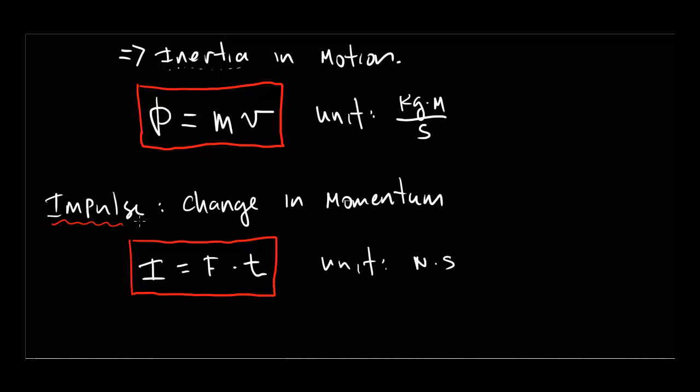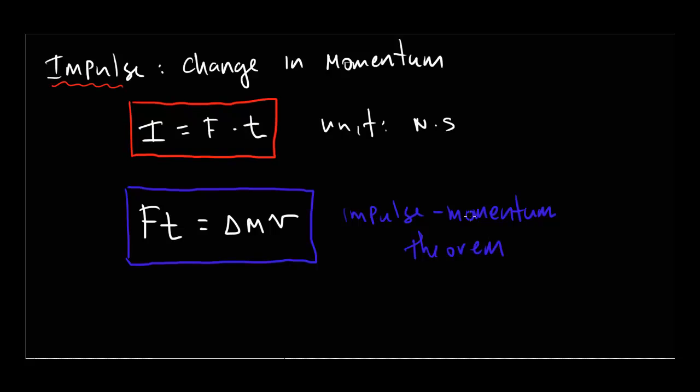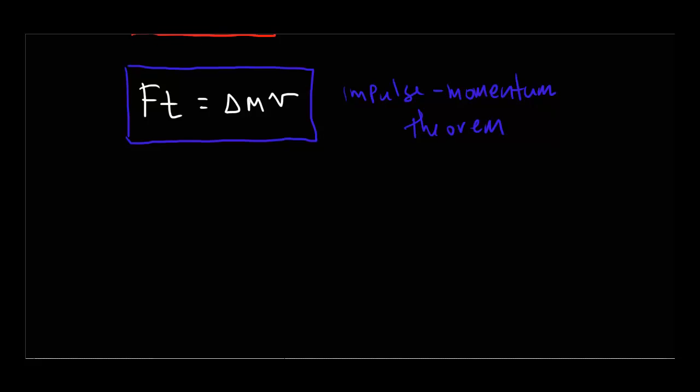Since impulse causes a change in momentum, I can combine these two equations. We call this the impulse momentum theorem. We can say that force times time, Ft, the impulse, equals the change in momentum, delta mv. This now is a very interesting statement right here. We call this the impulse momentum theorem. What this says here is if I apply a force for a given amount of time, it's going to cause a certain change in momentum. If we sort of fiddle around with the left-hand side here, we can realize some interesting things. Maybe we could explain some things that we already knew, some everyday things.